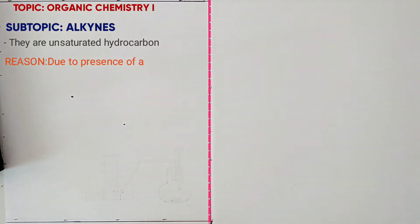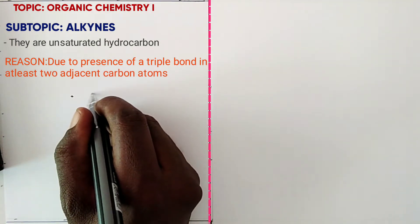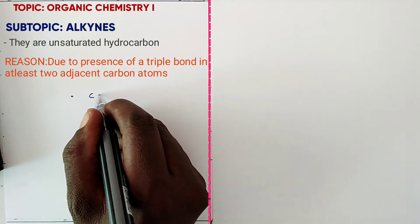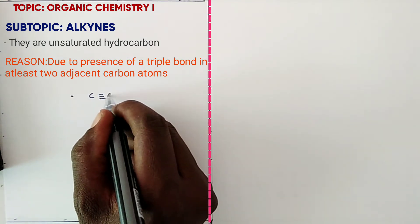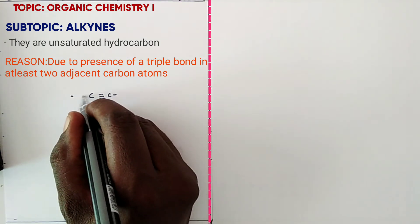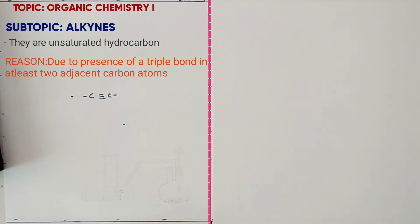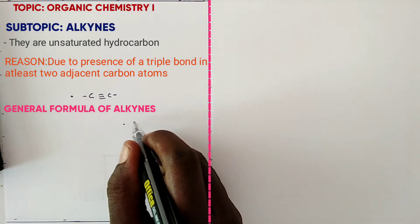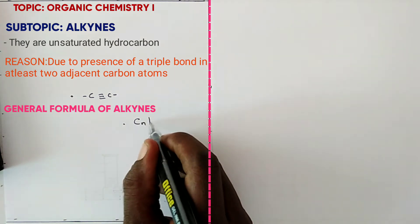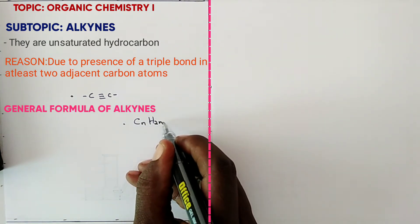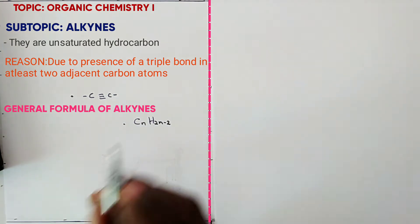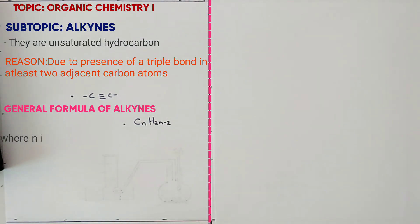At least two adjacent carbon atoms share a triple bond, as shown — a carbon atom, then a triple bond, with bonds arranged to make 4 bonds per carbon. The general formula of alkynes is CnH2n-2, where n is the number of carbon atoms.